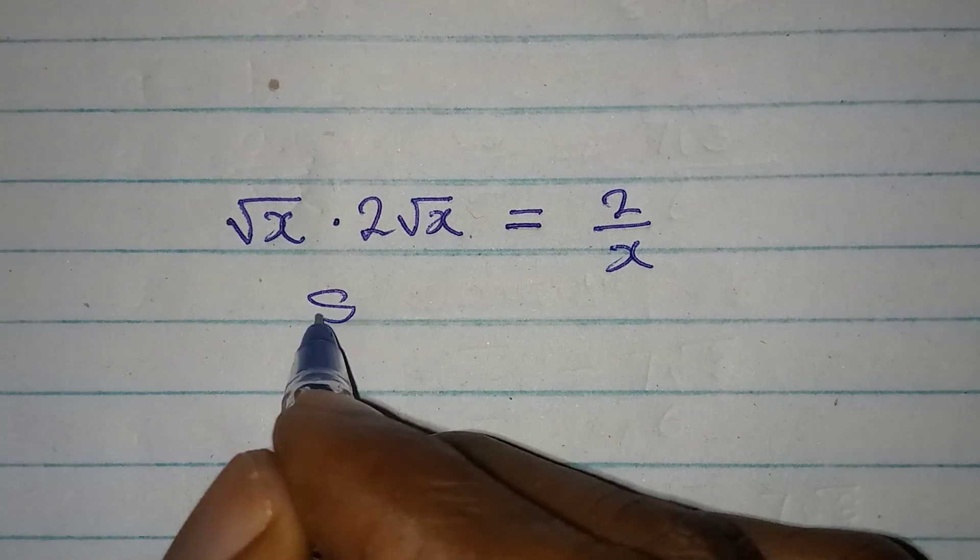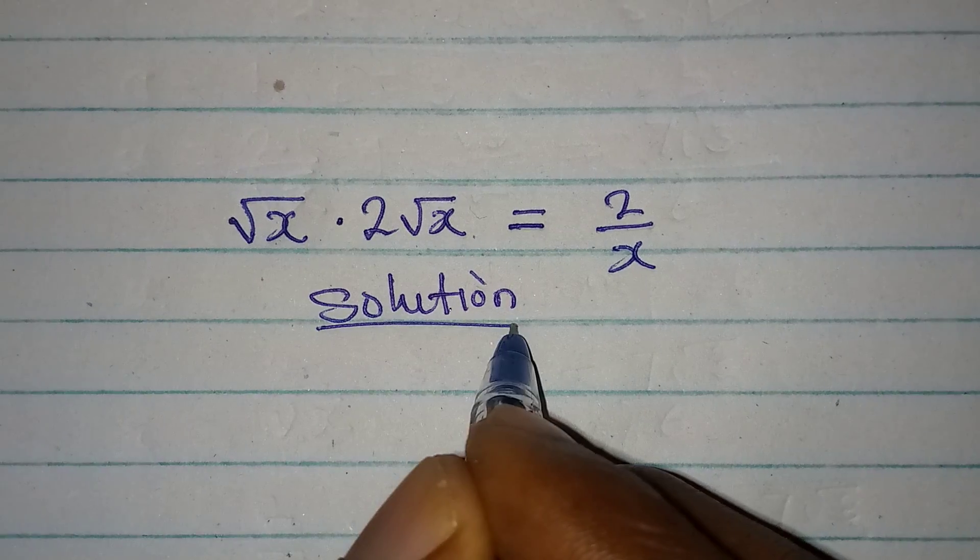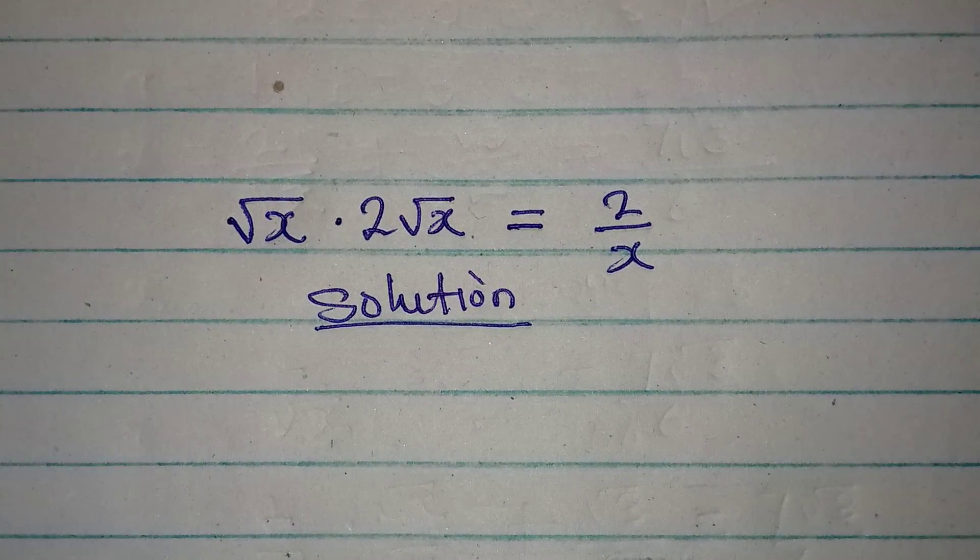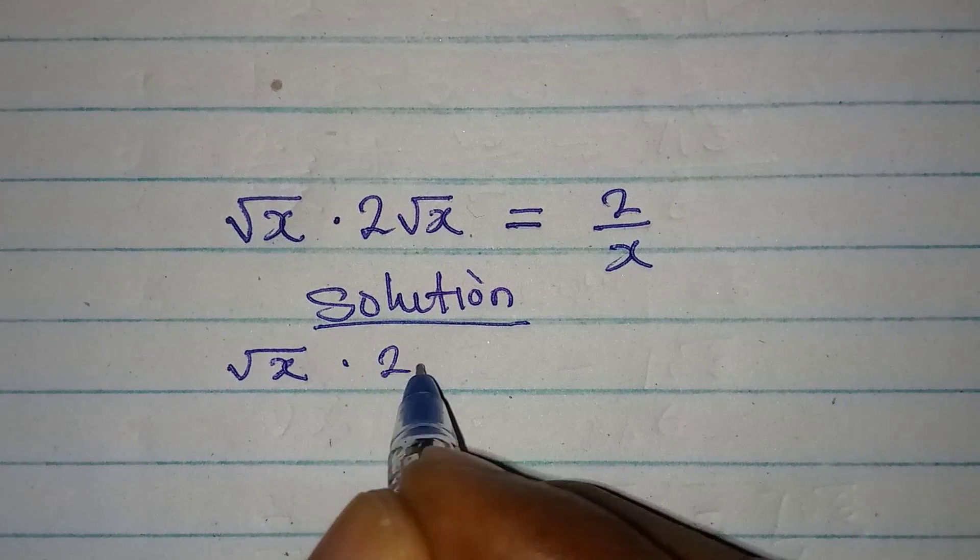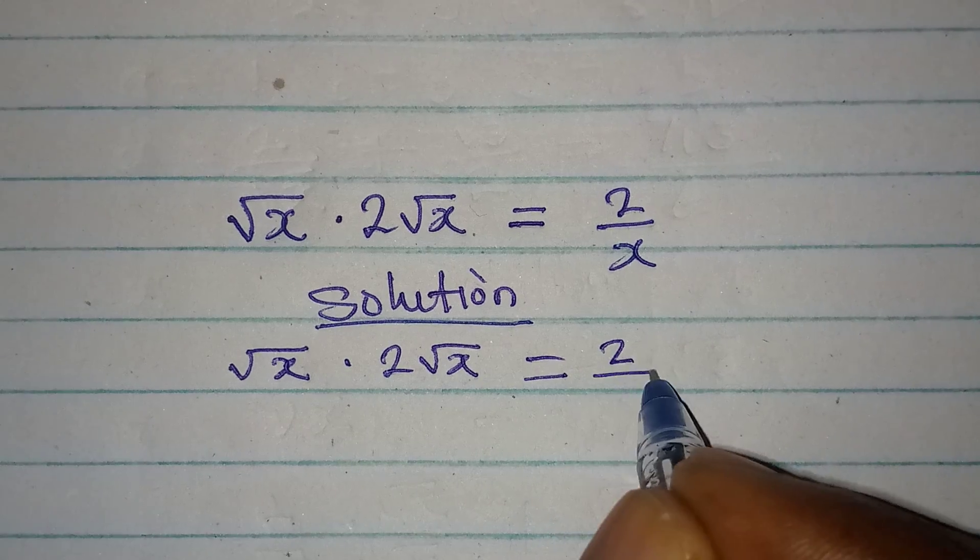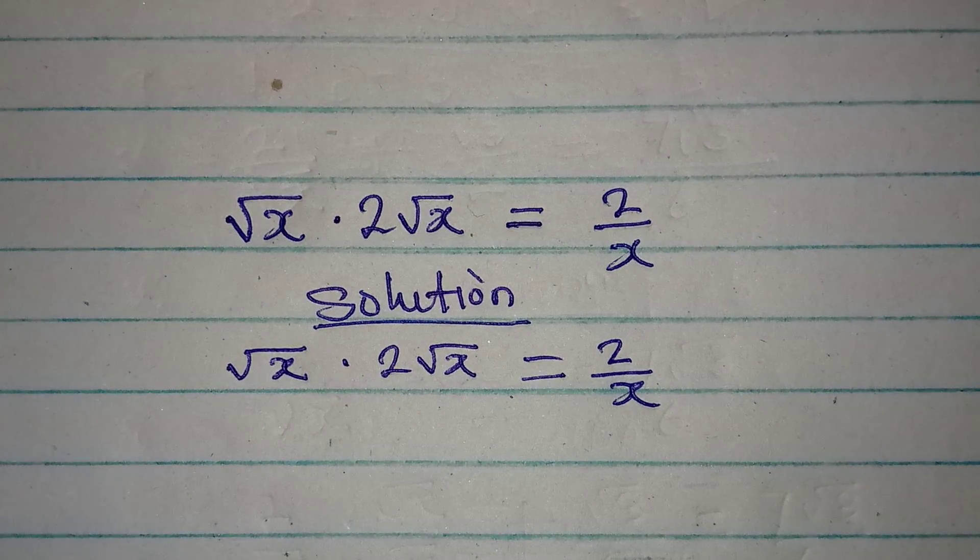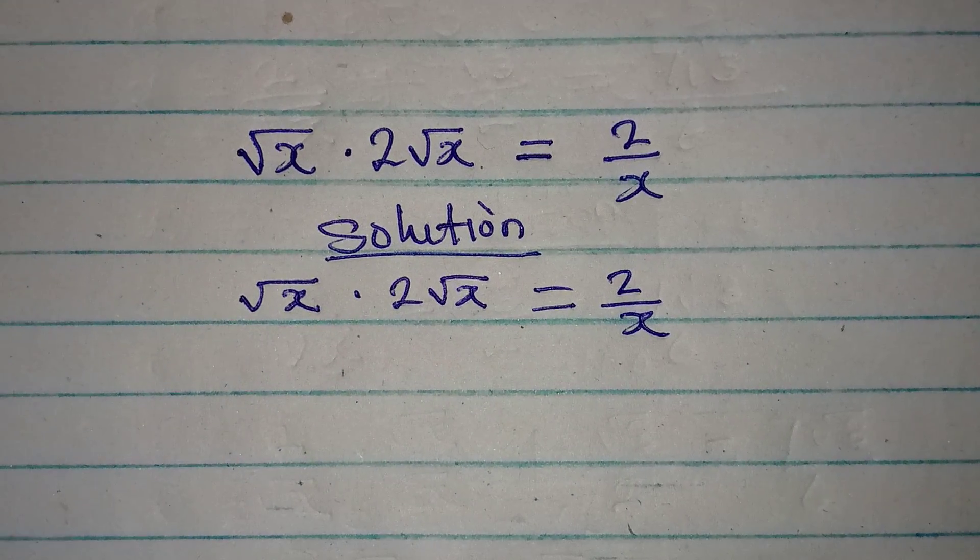Hello everyone, let's provide the solution to this problem. It looks complicated but it is simple. √x · 2√x = 2/x. Now what we will do is multiply the left hand side, and if we do that we are going to have...